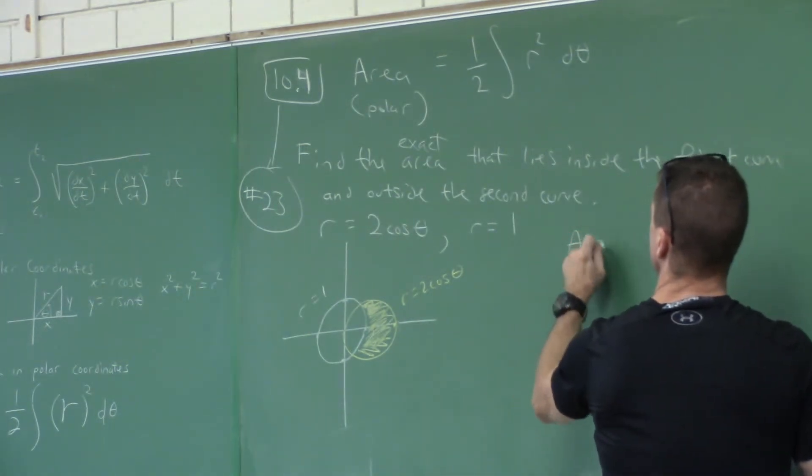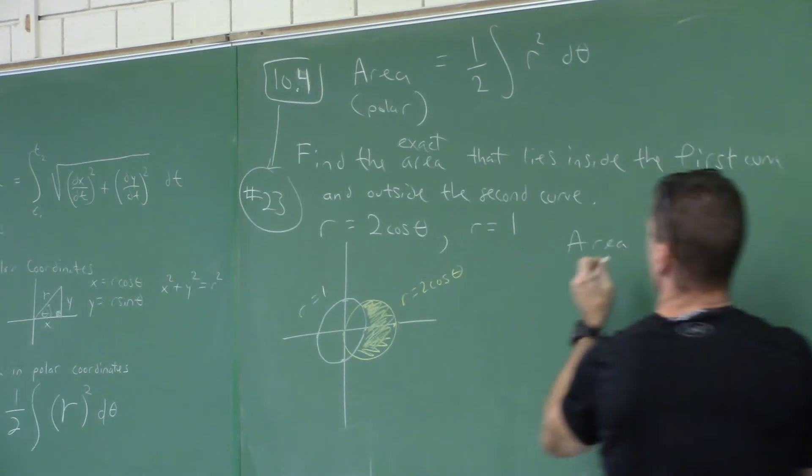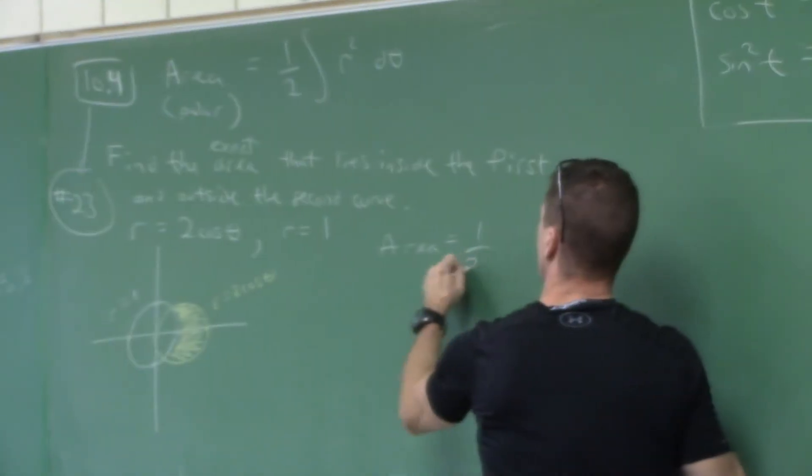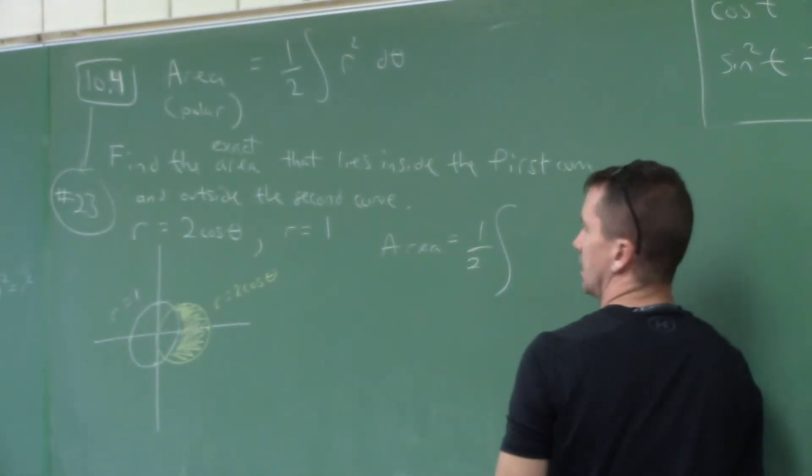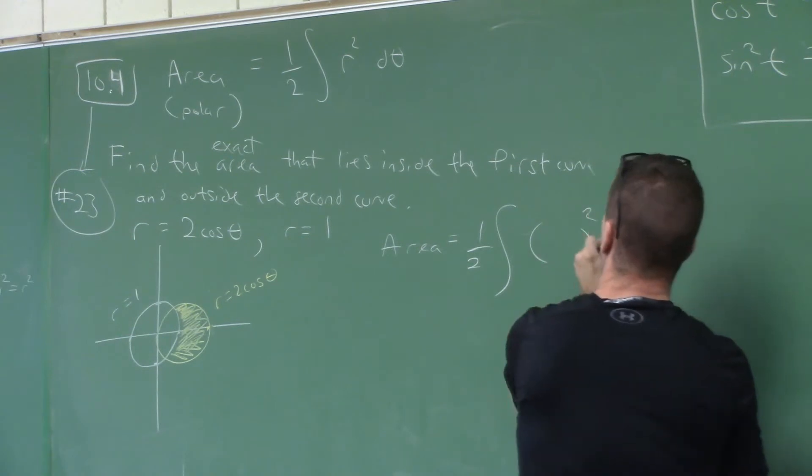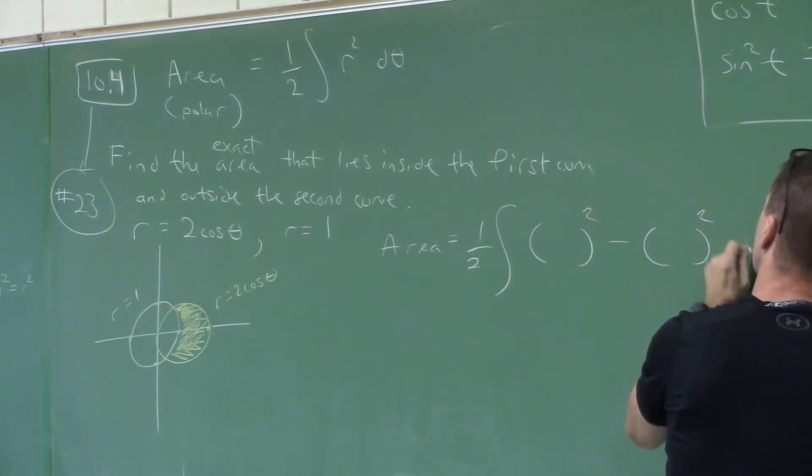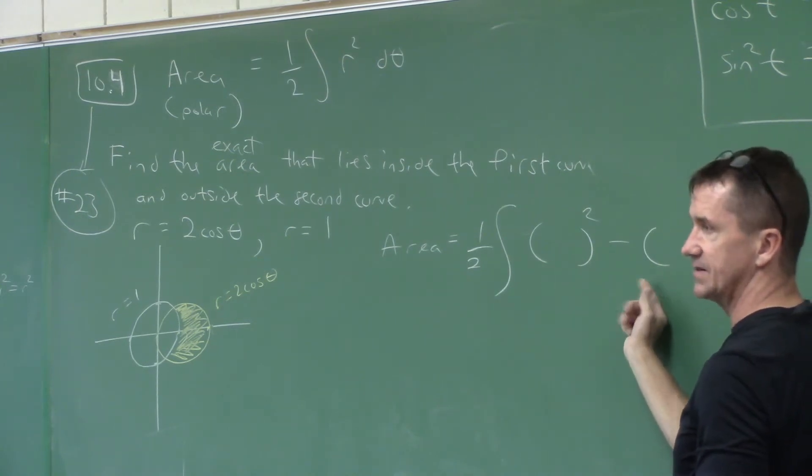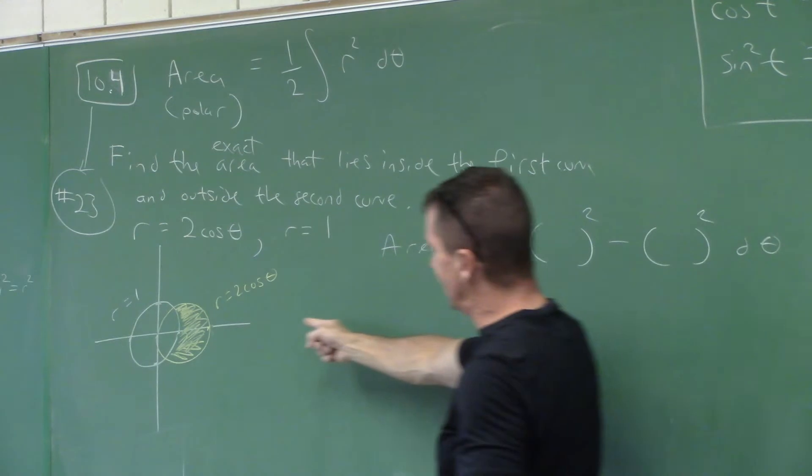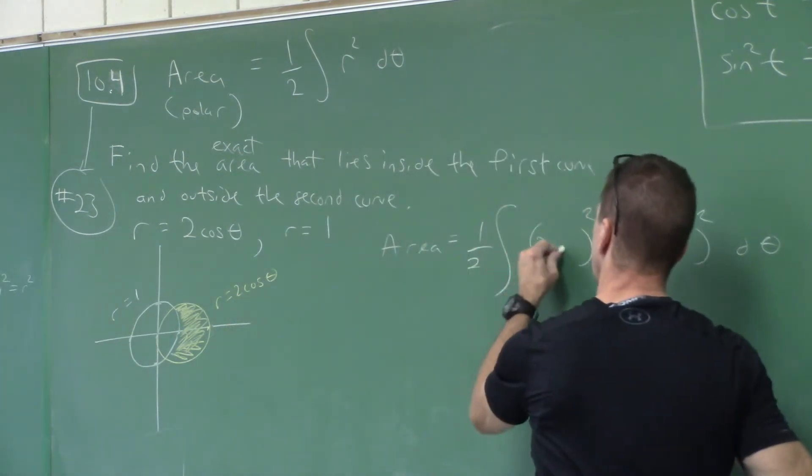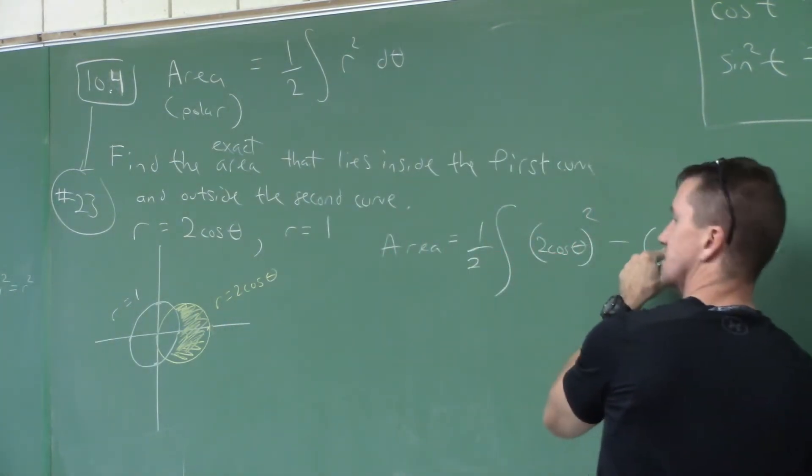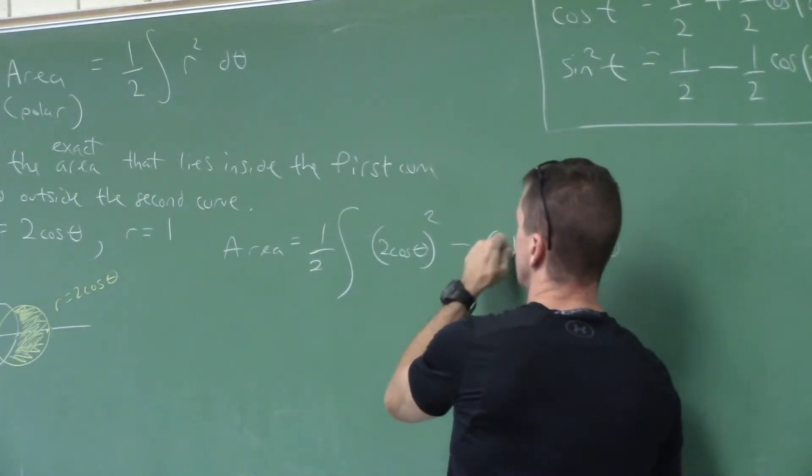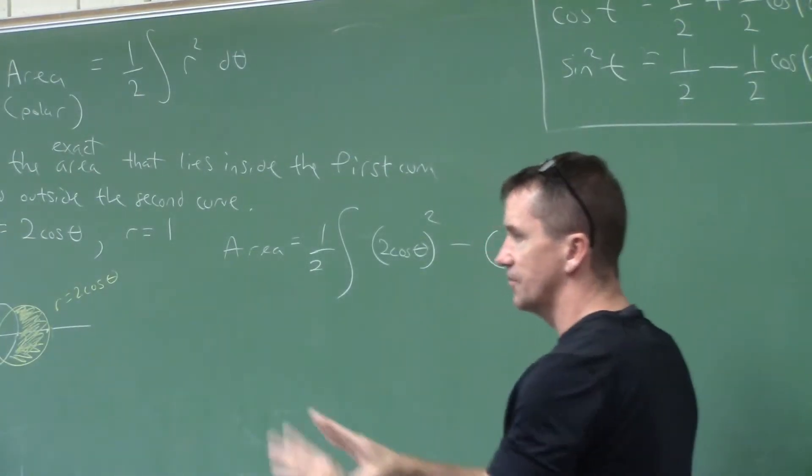This area will be, first I gotta use this formula here. One half, put an integral symbol, but you gotta do the r squared minus the r squared, d theta. Who's the outer? The outer one's that one way out here, which was that two cosine theta, and who's the inner? One. Just the one. So far so good?